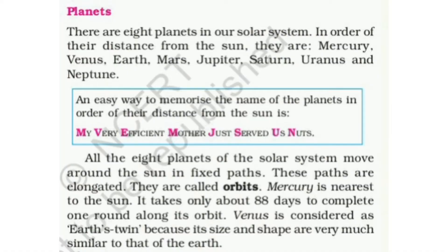Planets. There are 8 planets in our solar system. In order of their distance from the sun, they are Mercury, Venus, Earth, Mars, Jupiter, Saturn, Uranus, and Neptune. An easy way to memorize the names of the planets in order of their distance from the sun is: My Very Efficient Mother Just Served Us Nuts.